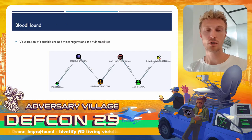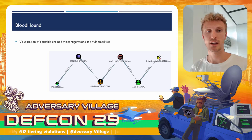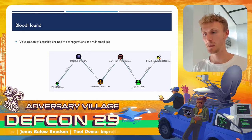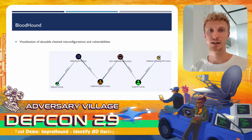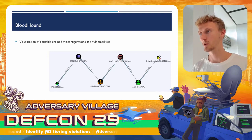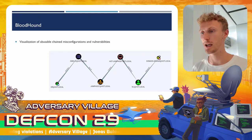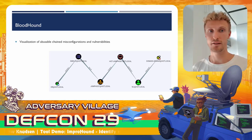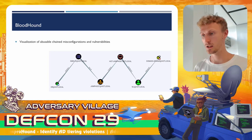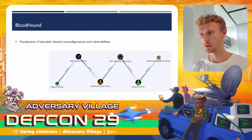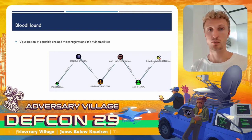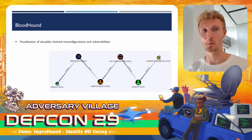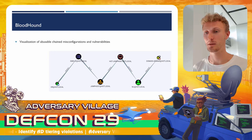To make matters even worse for sysadmins and defenders, it's actually quite easy to find and chain these misconfigurations and vulnerabilities, because you can use the awesome Bloodhound to identify these attack paths for you. Bloodhound collects a lot of data from the AD and puts it into a graph database, and then you can use Bloodhound to find the shortest path from a compromised user to a given target. In the example on the slide, it's a user called KR with a long attack path to the Domain Admins group. It would have taken hours to find this attack path manually, so Bloodhound can really help attackers with that.